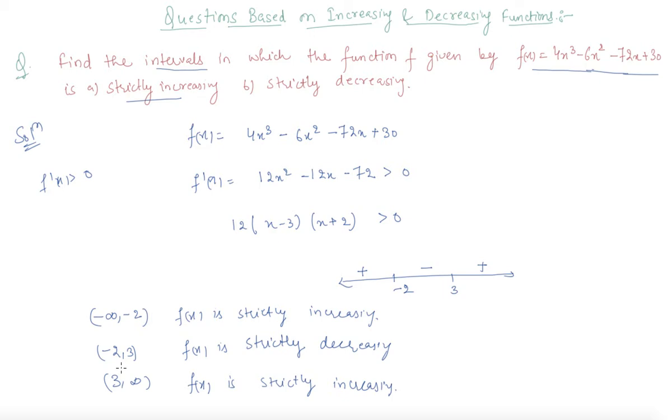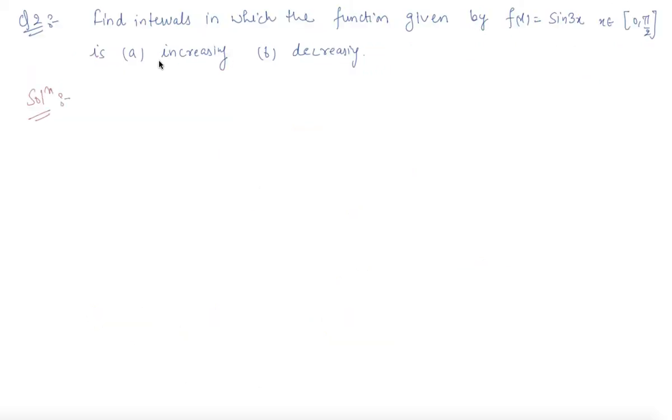Now let us move to question number 2. Students, here is question number 2, which states that find intervals in which the function given by f(x) = sin(3x), where x belongs to [0, π/2], is increasing or decreasing. We are given f(x) = sin(3x).